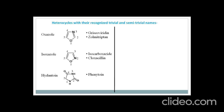Now here we have covered all the 5-membered rings. Next we discuss examples of heterocyclic rings that are 6-membered. The first one is pyridine. Pyridine is a 6-membered ring containing nitrogen as the heteroatom. Here is the numbering to this ring, and examples of drugs having this ring are isoniazid, niacin, nicotine, and isonicotinamide. Isoniazid is used as an anti-tubercular drug.